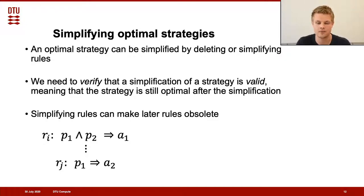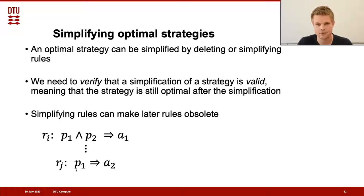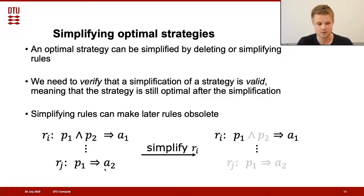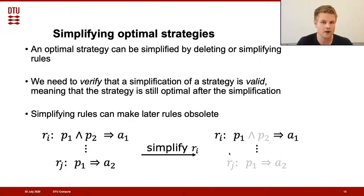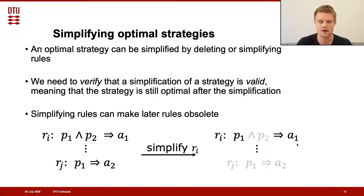Whenever we simplify rules, later rules can be made obsolete. For example, say rule Ri is 'if P1 and P2, then action A1', and rule Rj is 'if P1, then action A2'. If we simplify Ri by removing P2, then Rj becomes obsolete. Assuming A1 is always legal, for any state where Rj applies, Ri will also apply. Since Ri comes before Rj, Rj is entirely useless and can simply be deleted without any effect on the strategy.